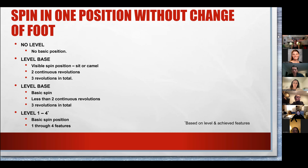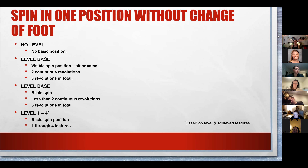A level base can also be attained with the basic spin position, and in this instance you can get it even if you don't quite have those two continuous revolutions, as long as you have three revolutions total. This is one of those areas where the adult calling clarifications give a little more leniency. To get level one through four, based on achieved features, you need that basic spin position and as many features as you perform up to the maximum for the level you are competing at.